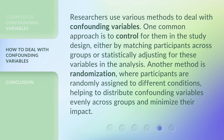Researchers use various methods to deal with confounding variables. One common approach is to control for them in the study design, either by matching participants across groups or statistically adjusting for these variables in the analysis. Another method is randomization, where participants are randomly assigned to different conditions, helping to distribute confounding variables evenly across groups and minimize their impact.